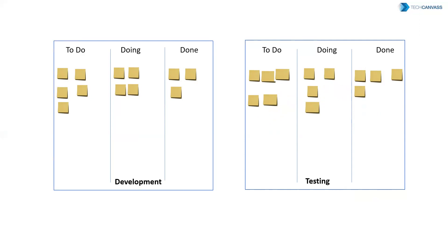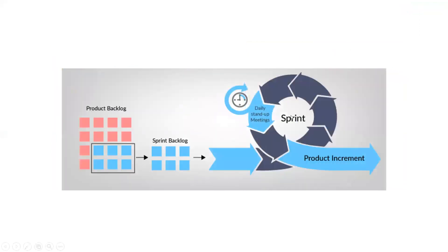Once testers are done with their user stories, they can pick up from the developed user stories. The Work in Progress (WIP) user stories at any point in time depends upon the capacity of the team. The development is time-boxed — at the start of the project, delivery is decided at regular intervals of two, three, or four weeks. This time frame is called a Sprint. The Sprint Backlog is taken from the Product Backlog superset, and the team decides which items need to be worked upon for that particular Sprint.